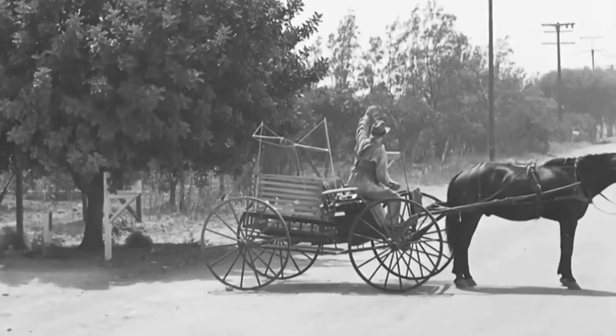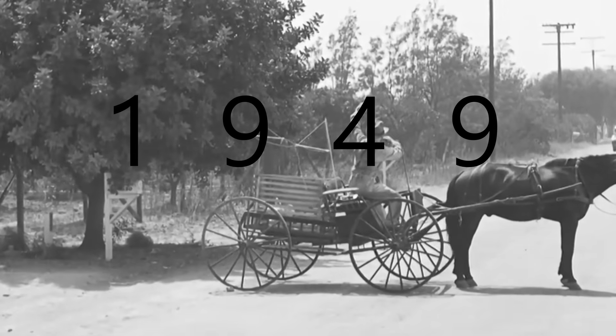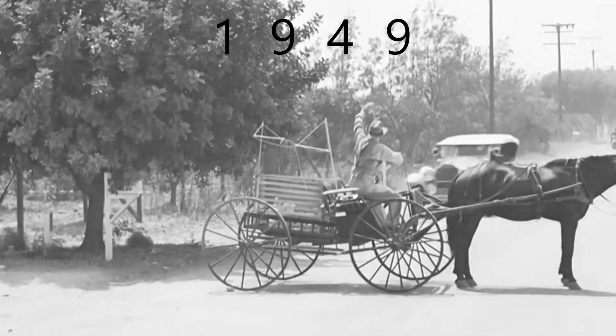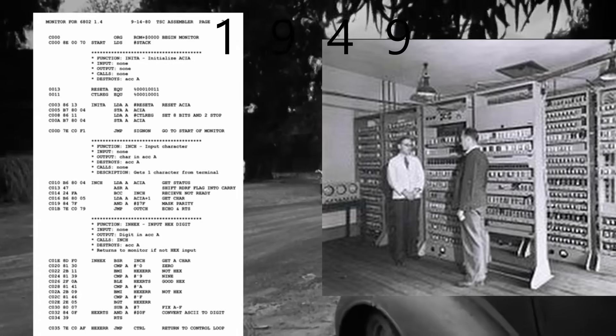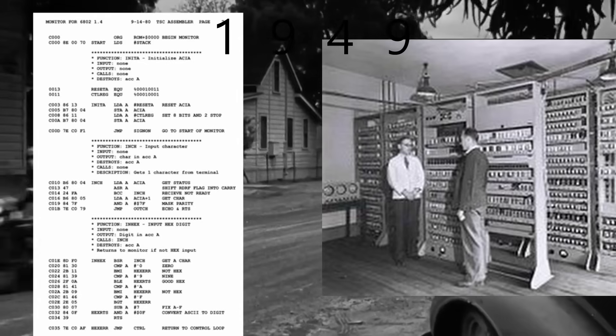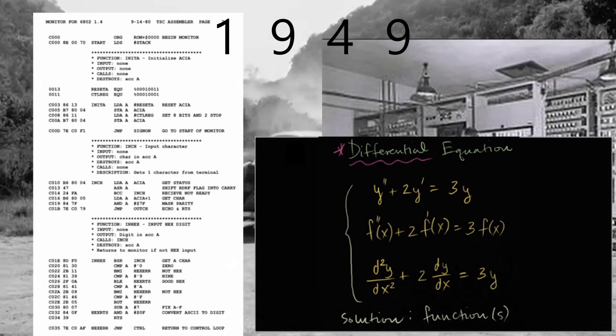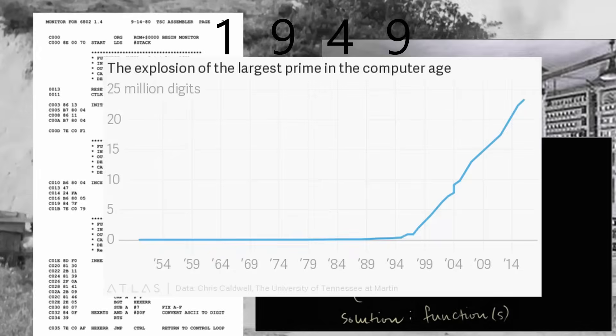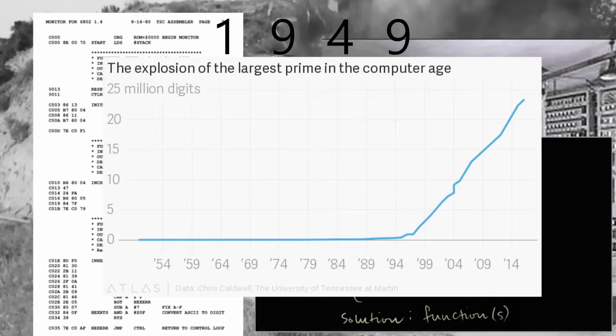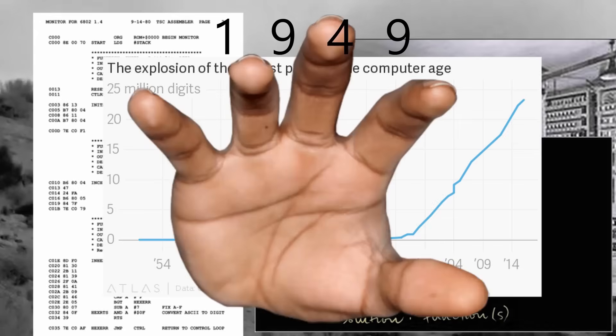Fast forward 66 years to 1949 — the low-level language known as Assembly was created. Assembly has a strong relationship between the instructions within the language and machine code instructions. It was first widely implemented in the Electronic Delay Storage Automatic Calculator, also known as EDSAC, constructed by Maurice Wilkes at the University of Cambridge. The calculator was used to solve differential equations and discovered a 79-digit prime number, the largest known at the time.